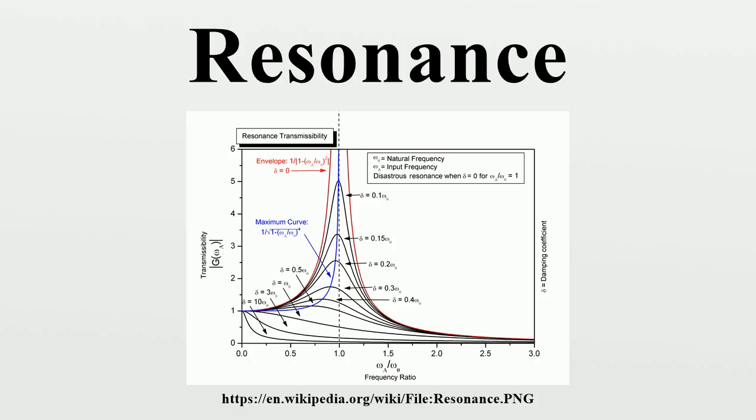An optical cavity, also called an optical resonator, is an arrangement of mirrors that forms a standing wave cavity resonator for light waves. Optical cavities are a major component of lasers, surrounding the gain medium and providing feedback of the laser light. They are also used in optical parametric oscillators and some interferometers. Light confined in the cavity reflects multiple times producing standing waves for certain resonant frequencies. The standing wave patterns produced are called modes. Longitudinal modes differ only in frequency while transverse modes differ for different frequencies and have different intensity patterns across the cross-section of the beam. Ring resonators and whispering galleries are examples of optical resonators that do not form standing waves.